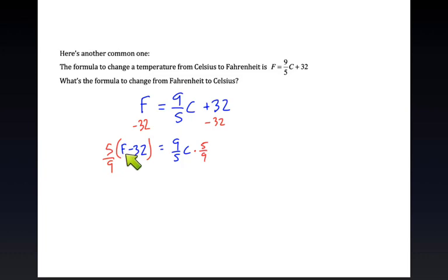Parentheses matter here because I need to multiply by five ninths by both the F and the 32. The nines cancel out over here on the right, the fives cancel out, and what do I get? This beautiful formula for Celsius when I know what Fahrenheit is.